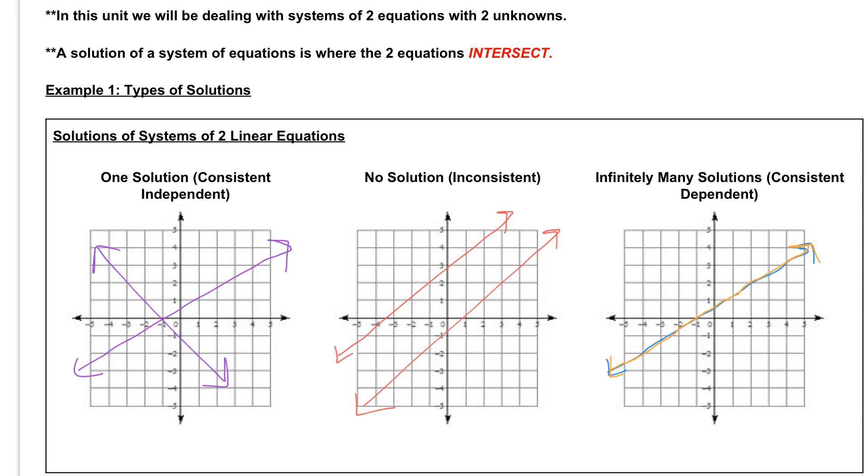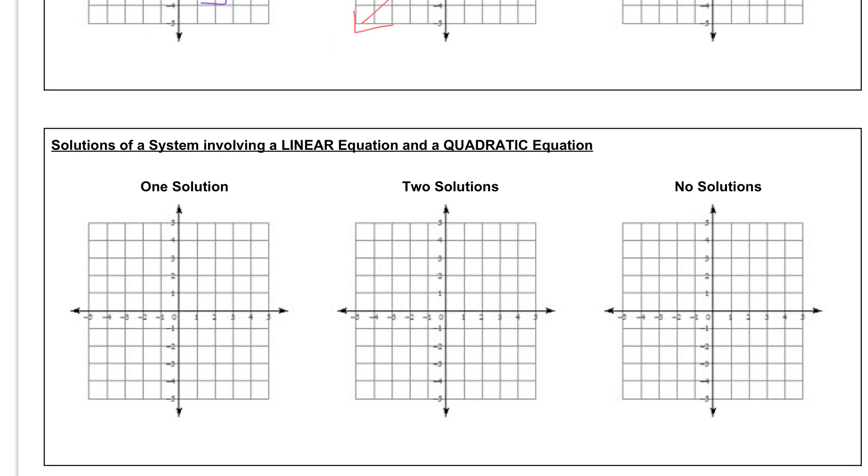The next type of system we could have is a system of linear equations and quadratic equations. So we could have one solution. If we have one solution, we would have our quadratic, which is a parabola, and then at some point, just at one point, we would have our line that intersects that parabola. So it intersects at just one point.